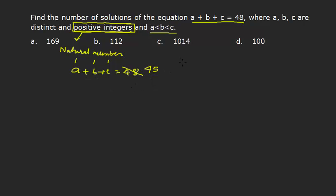If I apply the formula n + r - 1 C r - 1, here n is 45 and r is 3, I will have 45 + 3 - 1 C 3 - 1 and this is 47 C 2.